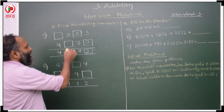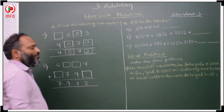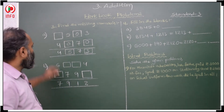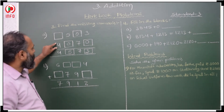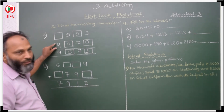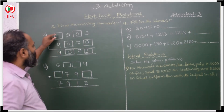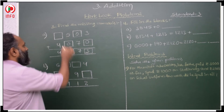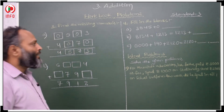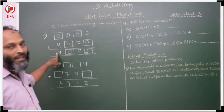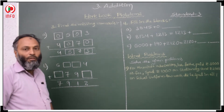It means if I take 0 here, then 5 plus 0 is 5. This is the addend, this is the sum. Addend and sum both are the same, so the other addend should be 0. Then only 0 plus 4 gives 4. Like this, we have to think and write.